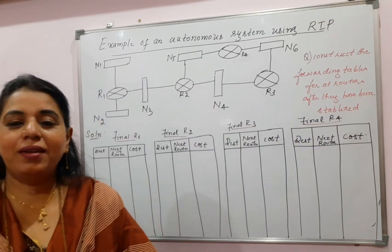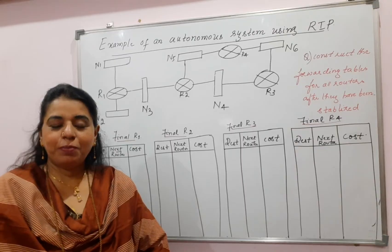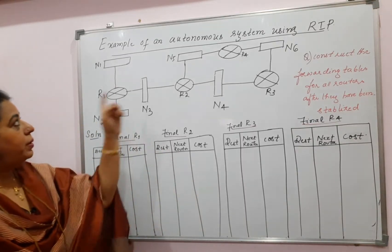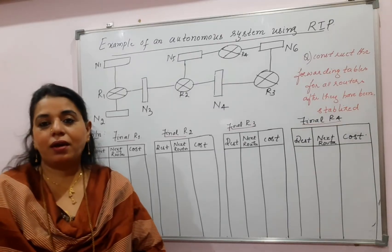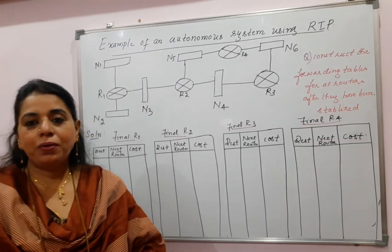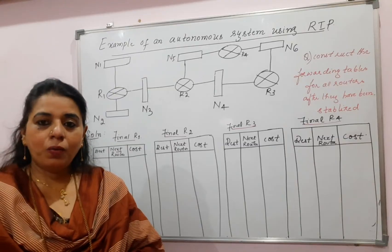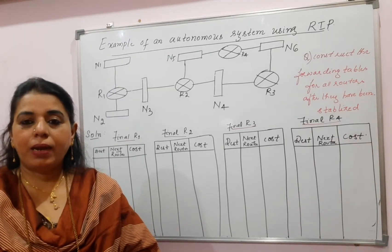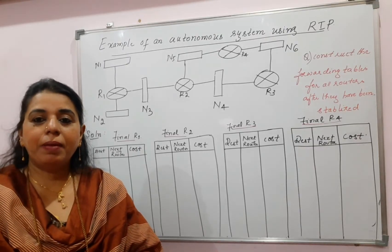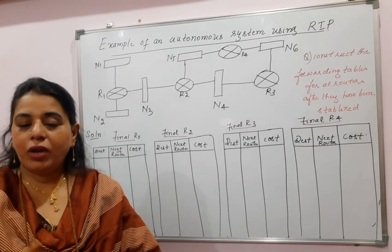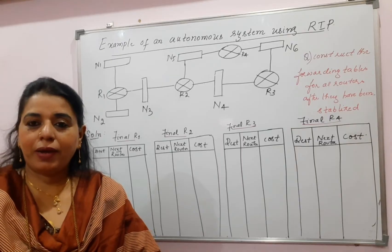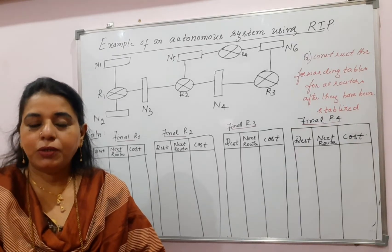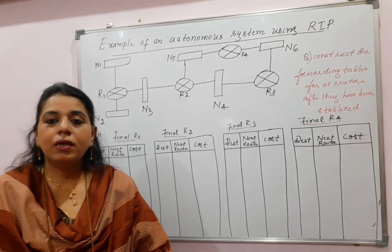Welcome back. In continuation with the previous video session, I shall be discussing one example of an autonomous system using Routing Information Protocol. You now know how to construct the forwarding table. Even if I'm using the word 'routing table,' the more appropriate word is 'forwarding table.' In previous video lectures I wrote 'routing table for R1,' 'routing table for R2' — but when we include the next-hop information, it becomes a forwarding table.